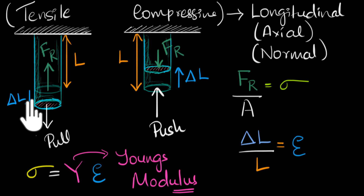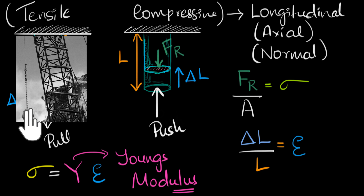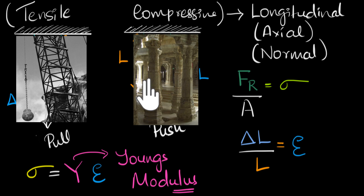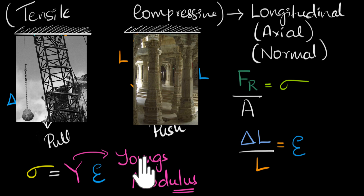Let's look at a couple of real-life examples of tensile and compressive stresses. For tensile stress, consider a wrecking ball used in demolishing buildings — it has a lot of weight and is hung by a steel wire or chain. The ball pulls on the wire, causing tensile stress, and if you want to calculate the strain generated, you would use Young's modulus. For compression, consider pillars in construction — the load above pushes down and the ground pushes up, causing the pillar to be compressed, generating stress and strain that you'd again calculate using Young's modulus.